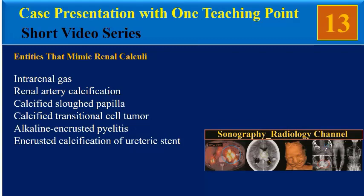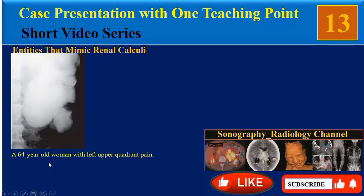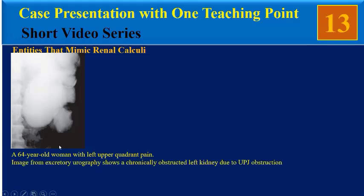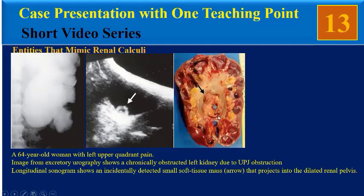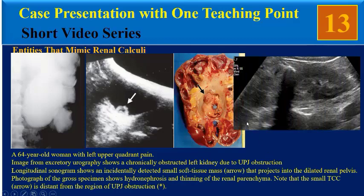Another entity is calcified transitional cell tumor. This is a 60-year-old woman with left upper quadrant pain. An image from excretory urography shows a chronically obstructed left kidney due to UPJ obstruction. A longitudinal sonogram shows an incidentally detected calcified small soft tissue mass projecting into the dilated renal pelvis, and pathology confirms this is a small TCC. Our patient is not compatible with this entity.